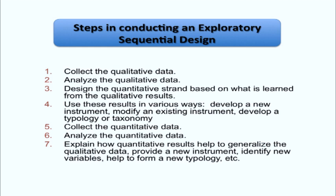The steps in this design are as follows. First, collect and analyze qualitative data. Then design something quantitatively — a quantitative strand based on what is learned from the qualitative results. For example, it could be to develop a new instrument because no existing instrument is good for the particular sample you're studying. Another reason might be to modify an existing instrument, to develop an intervention that might work with a group of people, or to develop some type of classification, typology, or taxonomy that would then be tested quantitatively.